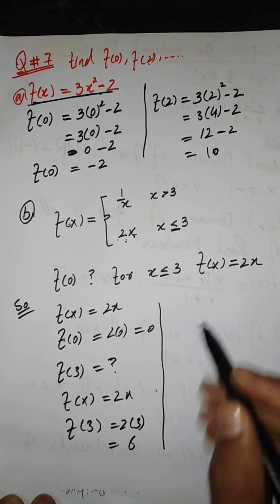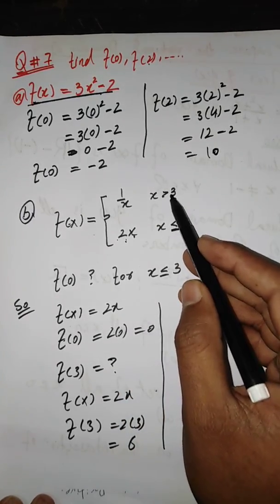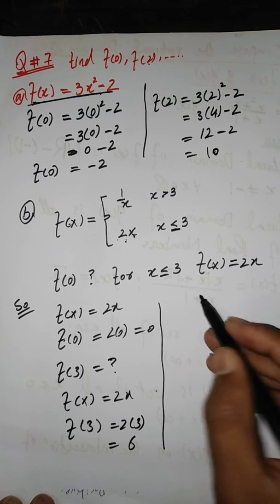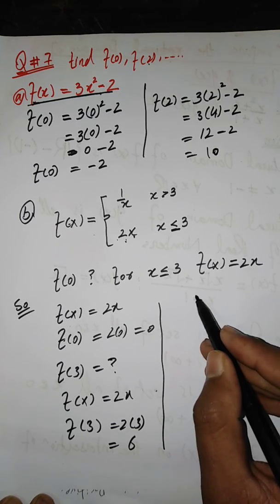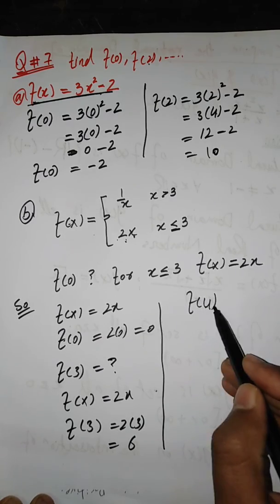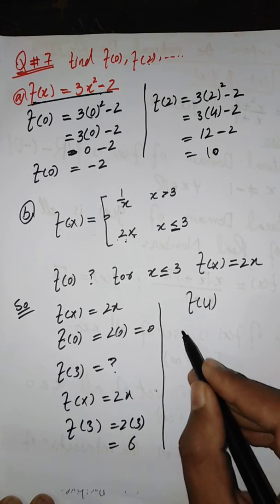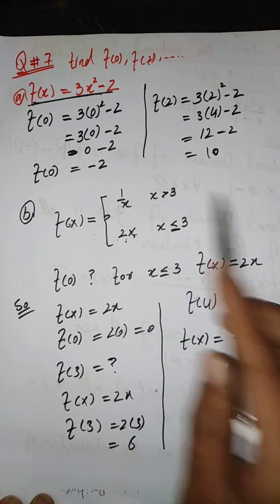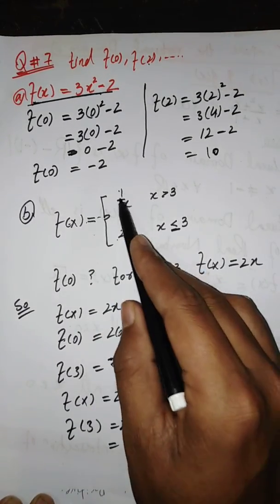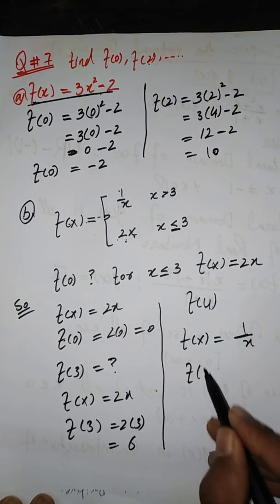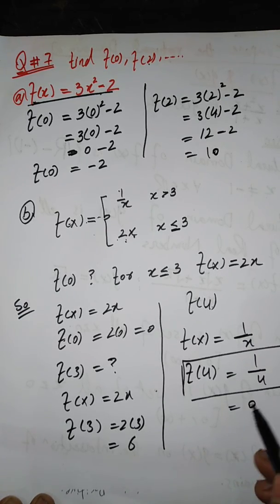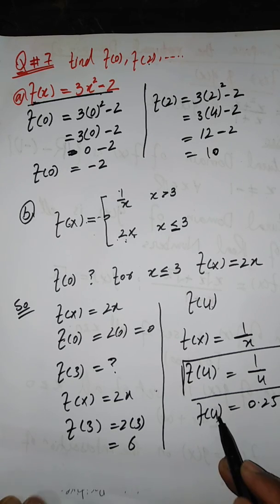Whenever the value is greater than 3, for example f(4): since 4 is greater than 3, we take the function f(x) = 1/x. So f(4) = 1 over 4, which equals 0.25. That is our answer for question number 7.